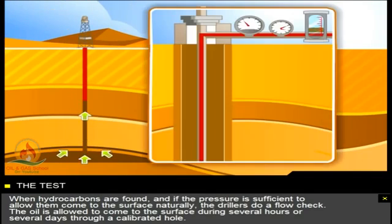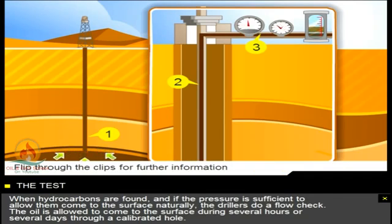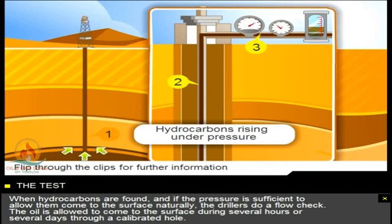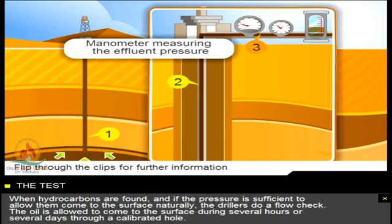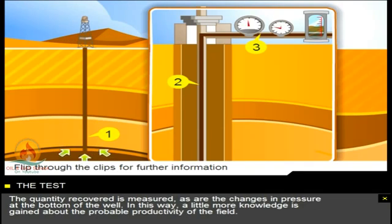When hydrocarbons are found, and if the pressure is sufficient to allow them to come to the surface naturally, the drillers do a flow check. The oil is allowed to come to the surface during several hours or several days through a calibrated hole. The quantity recovered is measured, as are the changes in pressure at the bottom of the well. In this way, a little more knowledge is gained about the probable productivity of the field.